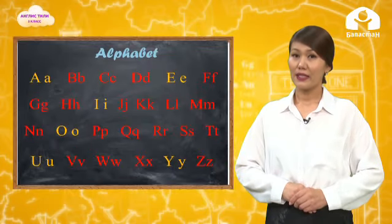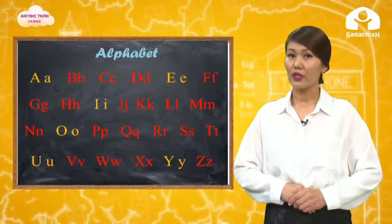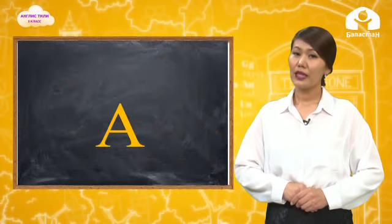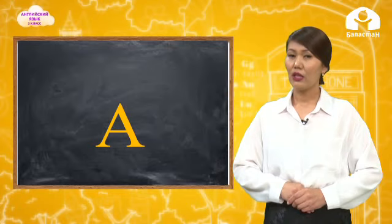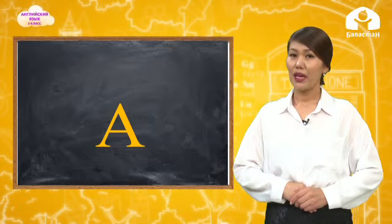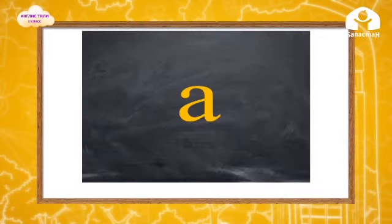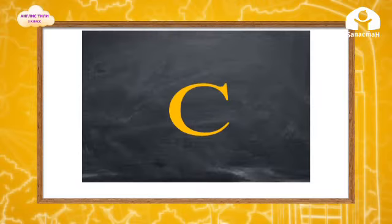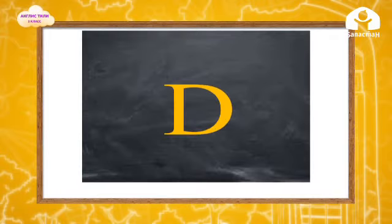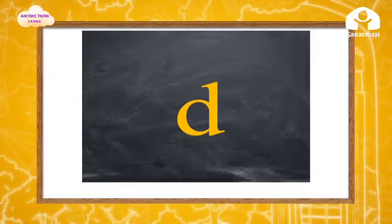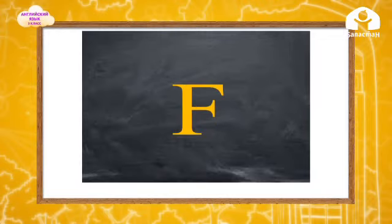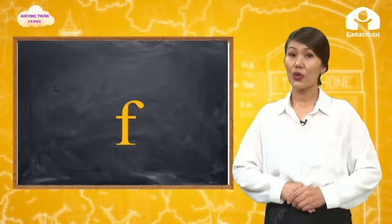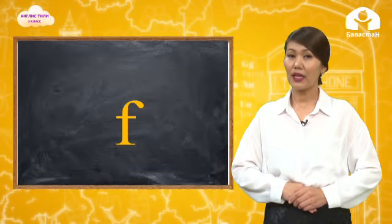There are 26 letters in the English alphabet. Six are vowels and 20 are consonants. We have capital and lowercase letters. For example, this is a capital A. This is a lowercase a. This is a capital B. This is a lowercase b. This is a capital C. This is a lowercase c. This is a capital D. This is a lowercase d. This is a capital E. This is a lowercase e. This is a capital F. This is a lowercase f. So, every letter has a capital and lowercase form.